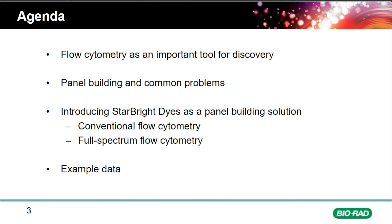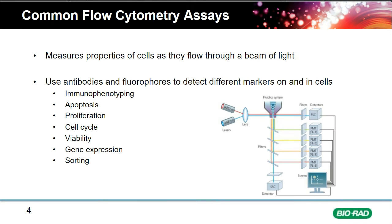Flow cytometry measures the properties of cells as they pass through a beam of light. Lasers are focused via a lens onto a stream of cells in a single cell suspension. These cells have antibodies conjugated to fluorescent dyes. The light emitted is split into each different wavelength from different fluorescent dyes, detected on a PMT or APD, and converted from photons into an electronic signal displayed on your computer.